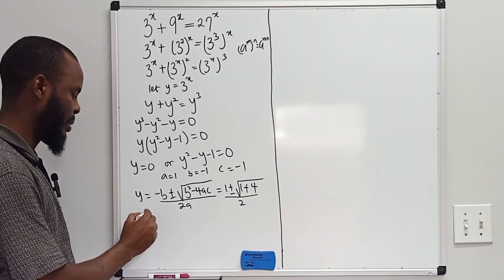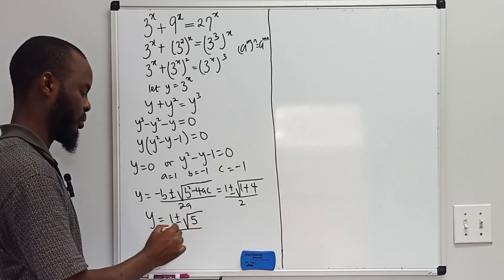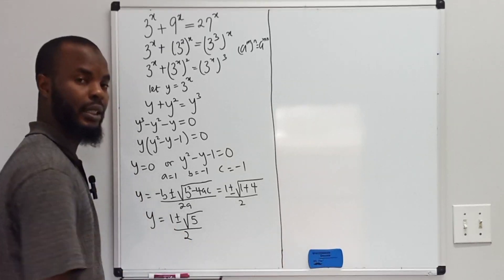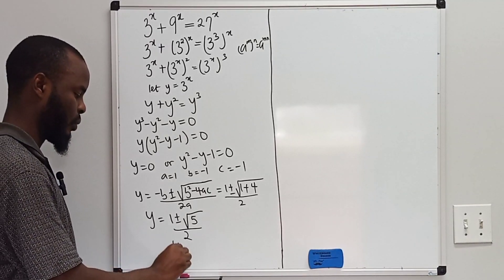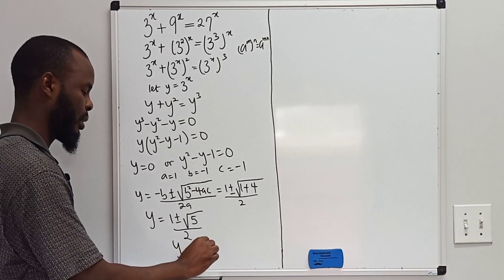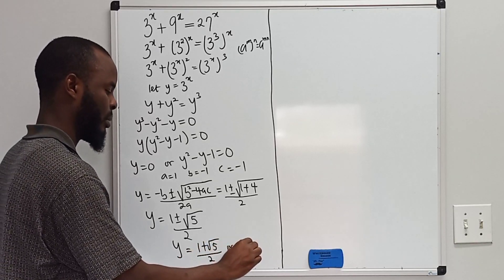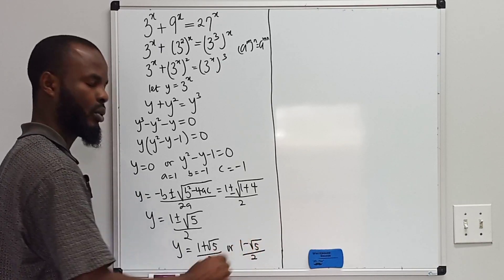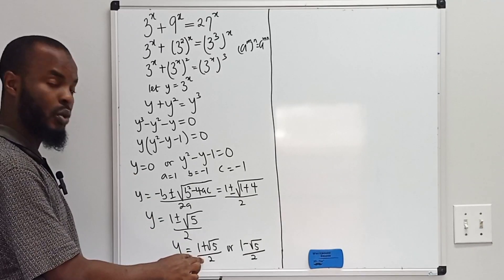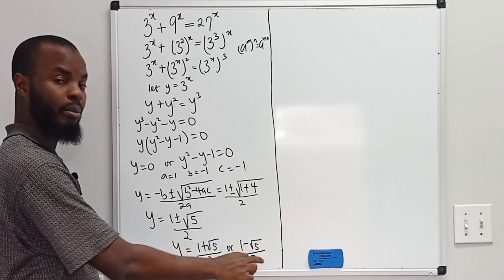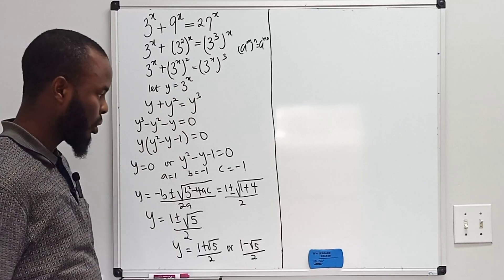4ac is going to be 4 times 1 times 1, which is 4. So we have plus 4 over 2. This shows that y is going to be 1 plus or minus the square root of 5, over 2. So we have two values for y: y equals 1 plus root 5 over 2, or y equals 1 minus root 5 over 2.